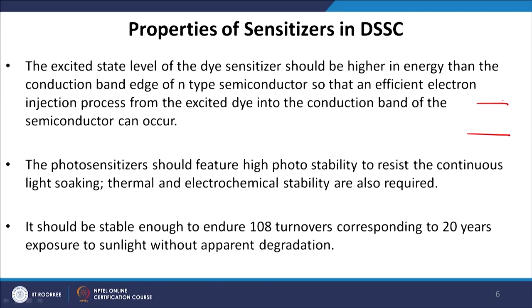To recap: the excited state of the dye (Es) must always be higher in energy than the conduction band of TiO2 so that the electron can inject from the excited state to the conduction band. The next point is that the photosensitizer should feature high photo-stability to resist continuous light soaking. Thermal and electrochemical stability are also required. The material must not degrade or change its structural and optical properties upon prolonged exposure to light, making photo-stability as well as thermal and electrochemical stability very important when choosing the sensitizer.